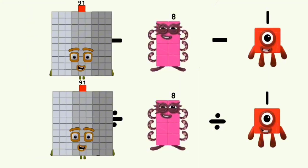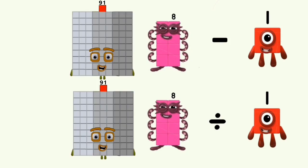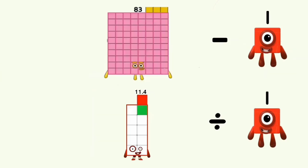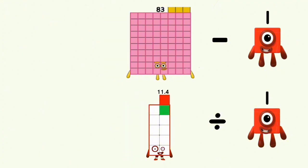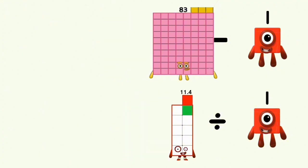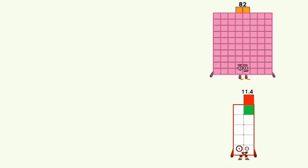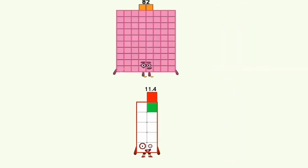91 minus and divided by 8 equals 83 and 11.4. 83 minus 1 and 11.4 divided by 1 equals 82 and 11.4.